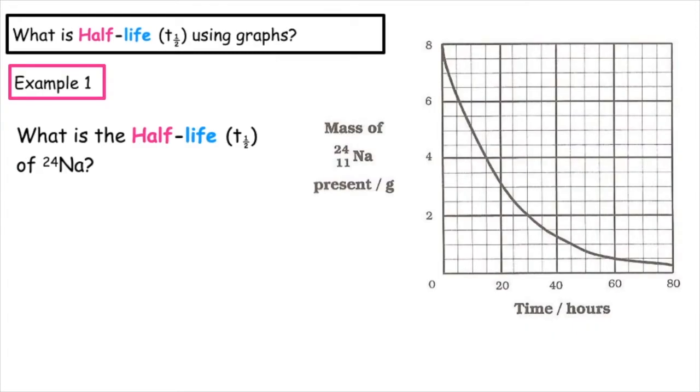In these examples, we want to calculate the half-life using a graph. The question asks us to calculate the half-life of sodium-24. What we first have to do is look at the y-axis, and we need to look at the value which is highest and has been plotted on the graph. We can see here that the mass of the sodium-24, which is present, is eight grams at time zero.